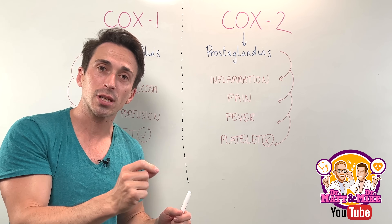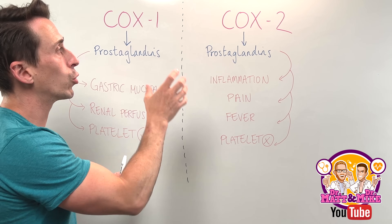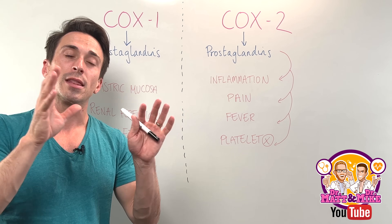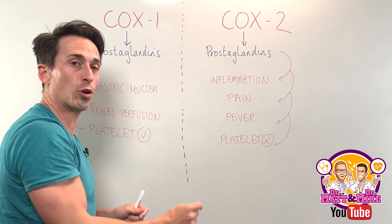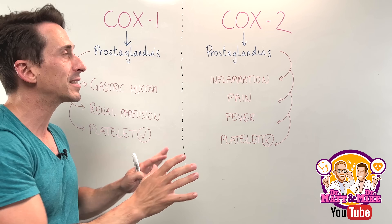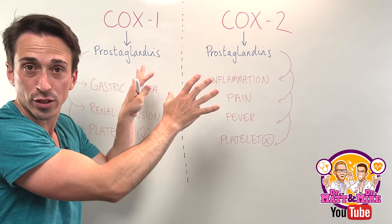These prostaglandins are synthesized by an enzyme called COX. There are two types — COX-1 and COX-2 — and the NSAIDs inhibit these COX enzymes.